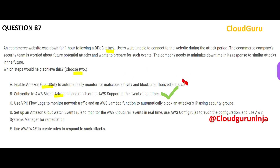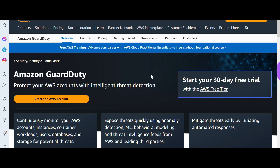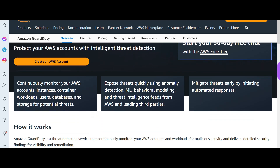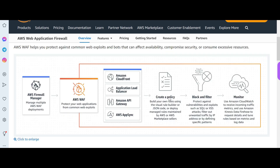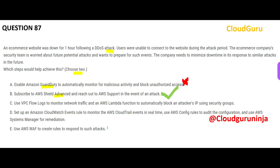GuardDuty is like your security guard — it monitors your instances and databases for threats continuously. Separately, whenever you want to protect web applications, you should use WAF. The scenario says it is a web application, so you can create a rule using WAF — that is option E. So we have two things: first, we use Shield, and second, we use WAF to respond to such attacks. These two are the correct answers.